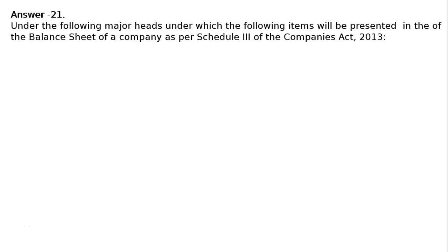Question 21. Name the major heads under which the following items will be presented in the balance sheet of a company as per Schedule 3 of the Companies Act 2013. Answer 21. The major heads under which the following items will be presented in the balance sheet of a company as per Schedule 3 of the Companies Act 2013 are as follows.